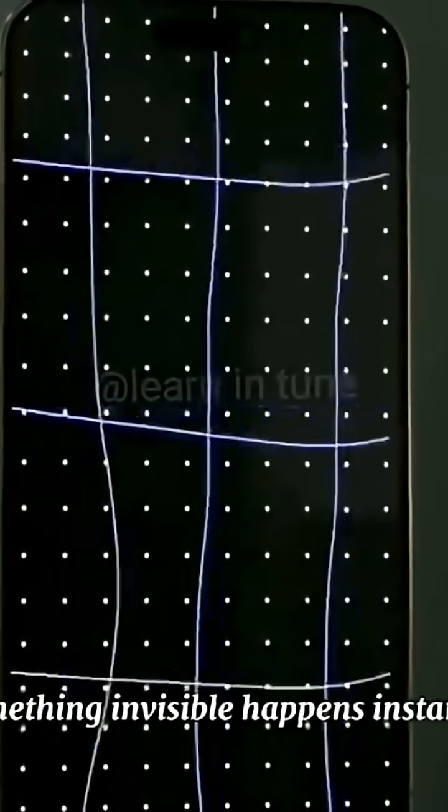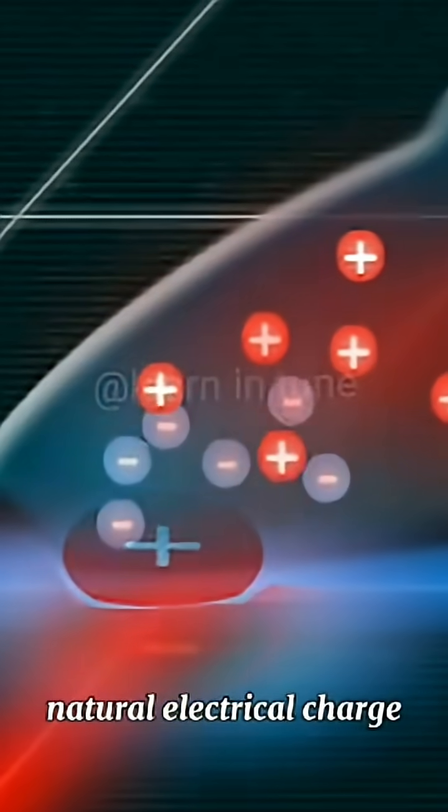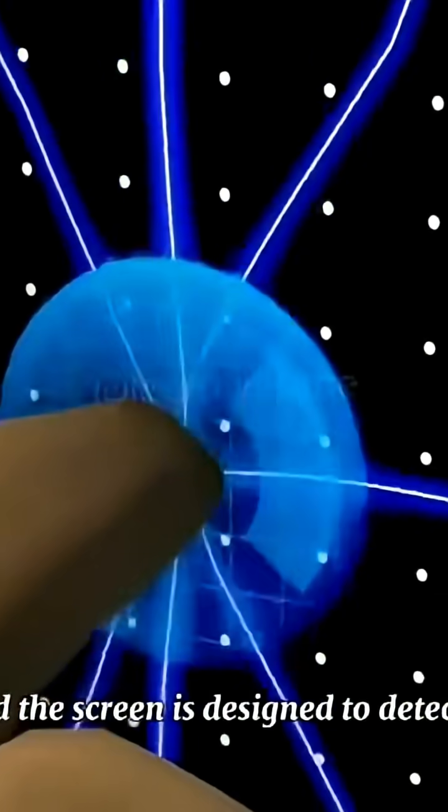When you touch your phone screen, something invisible happens instantly. Your fingertip carries a small natural electrical charge, and the screen is designed to detect it.